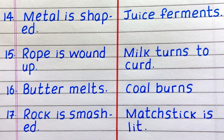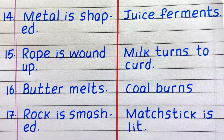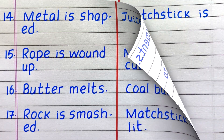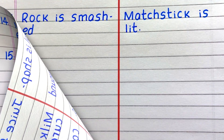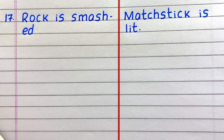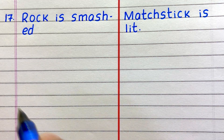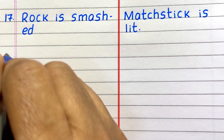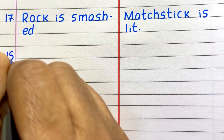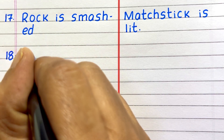Seventeenth example of a chemical change is matchstick is lit.